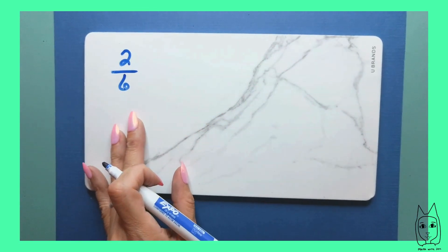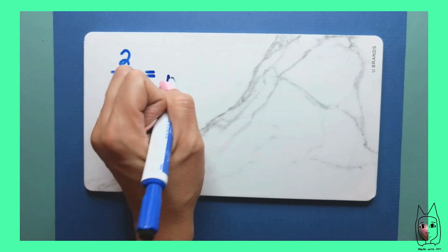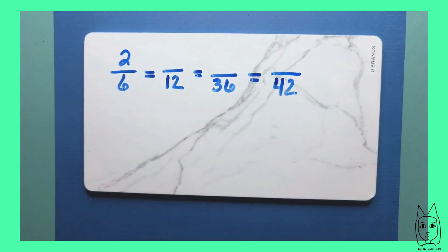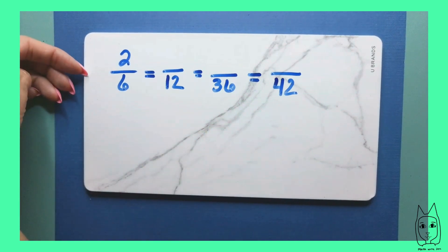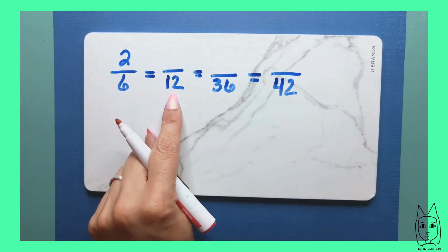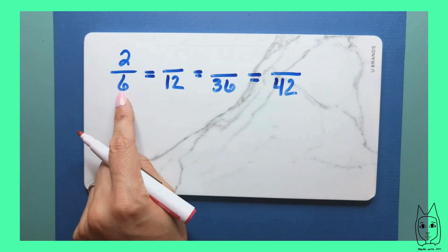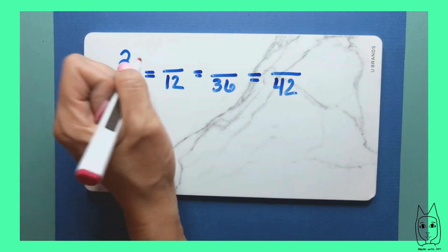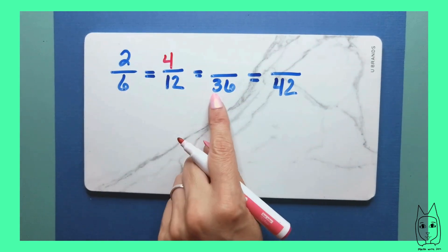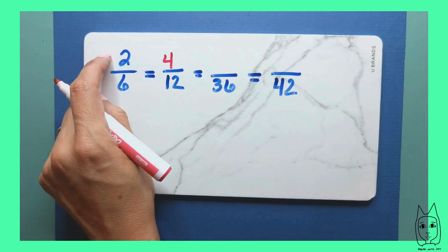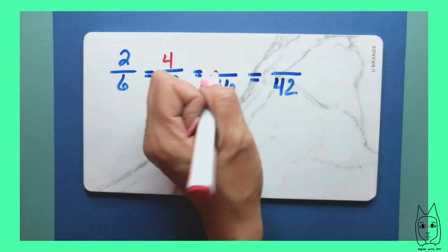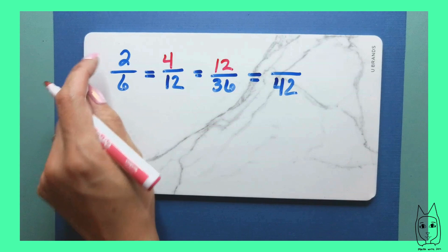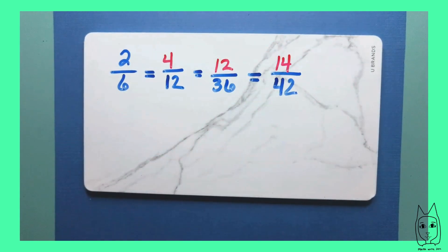Let's look at two-sixths and think about the multiples of six: 12, 36, 42 — just some multiples of six. If I know my multiples of six, I can create equivalent fractions to two-sixths. Six times two is 12, meaning each of these parts have been broken into two equal parts, so two times two is four. Six times six is 36, so each of these parts have been broken up into six, and two times six is 12. Six times seven is 42, so two times seven is 14. That's what equivalent fractions are.